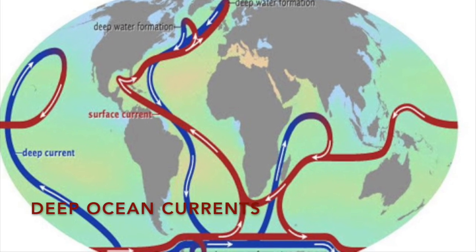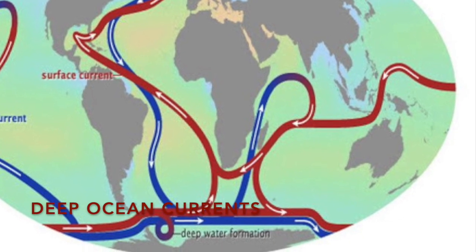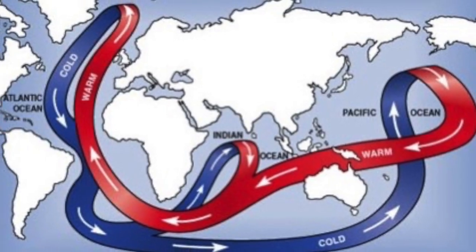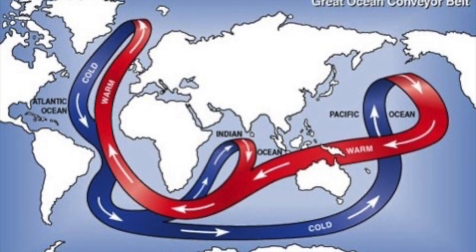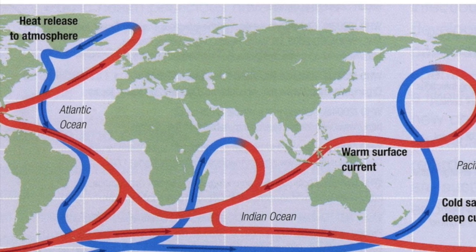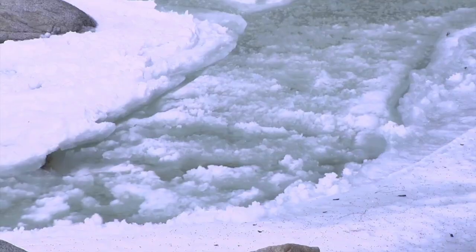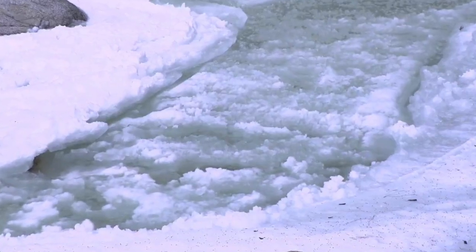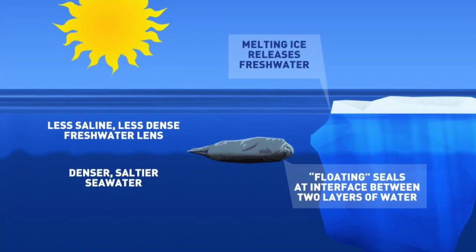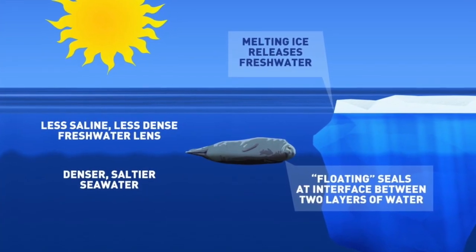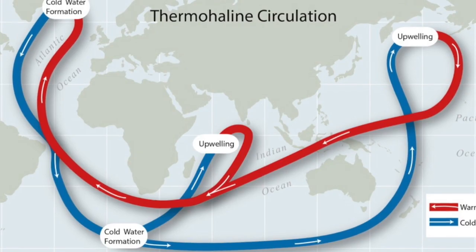Deep ocean currents are caused by differences in water density. The differences in water density are caused by variations in temperature and variations in the salt level. When incoming water comes to the North Atlantic Ocean, the temperature drops because of the atmosphere. The water starts to form into ice. The salt in the water is left behind and the salt makes water around the area more dense. Since it is more dense, it sinks and more water comes to take its spot.